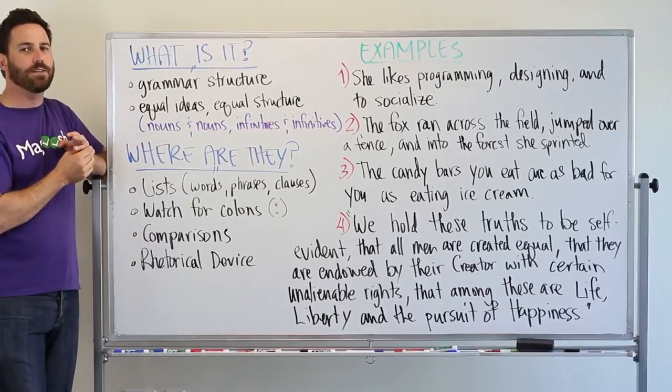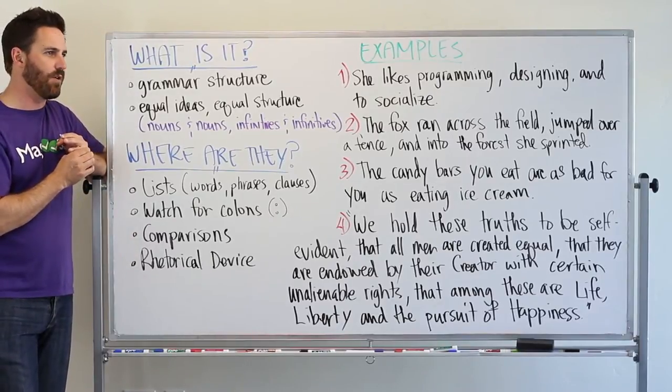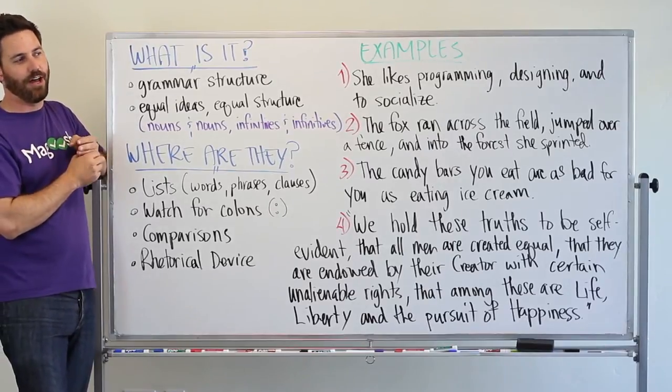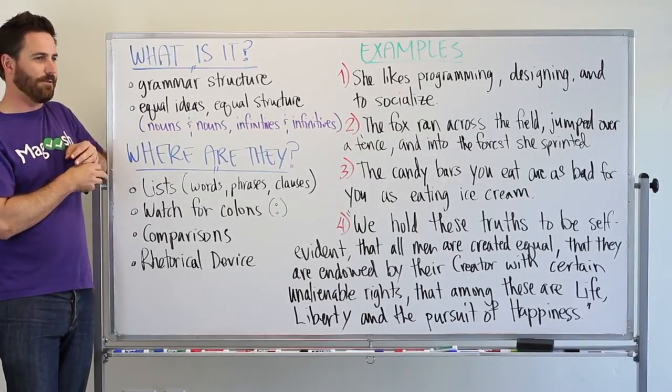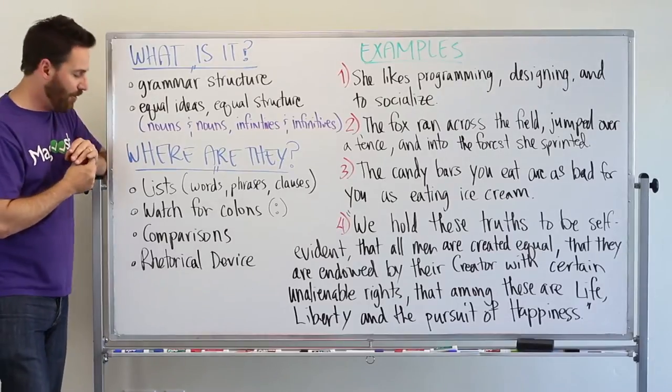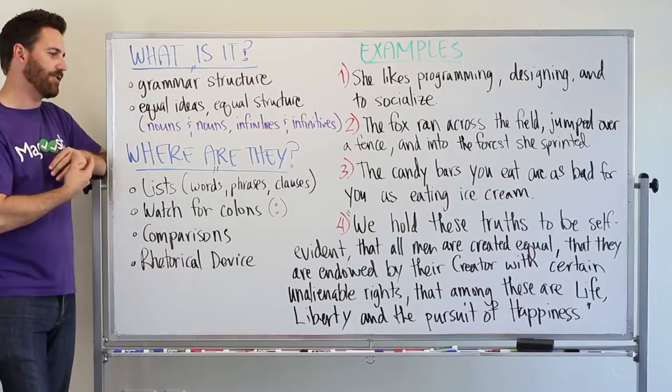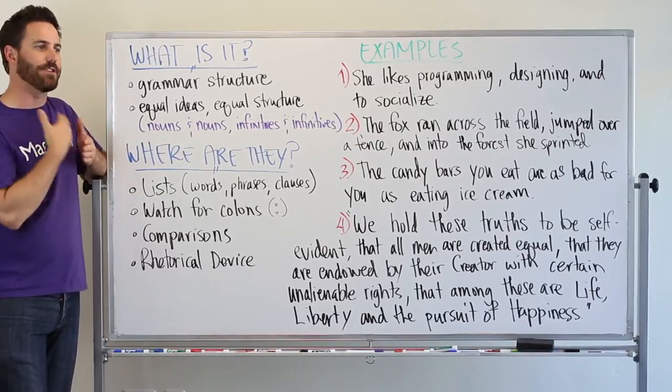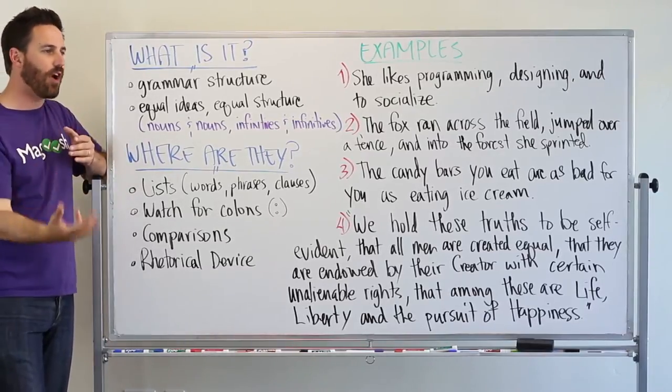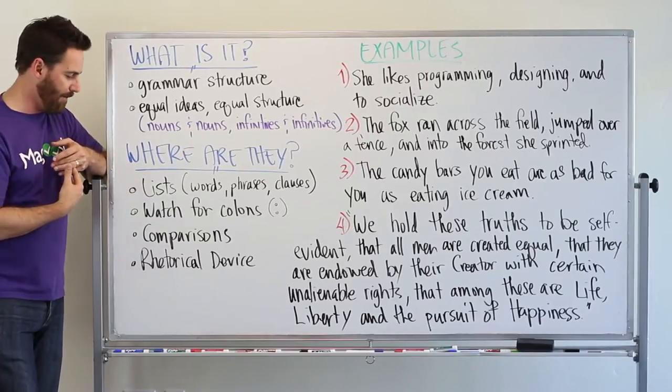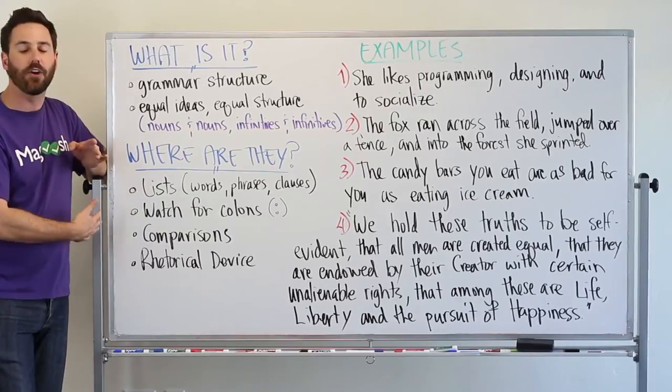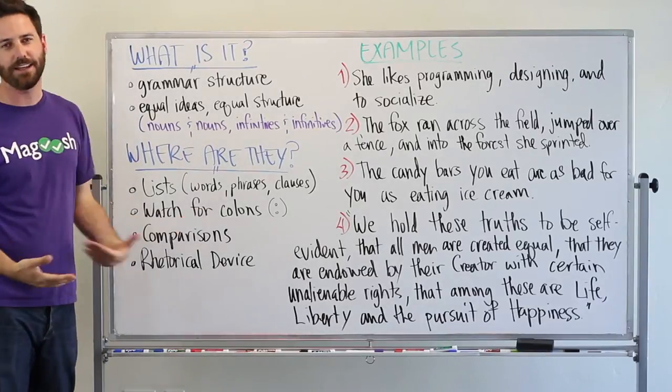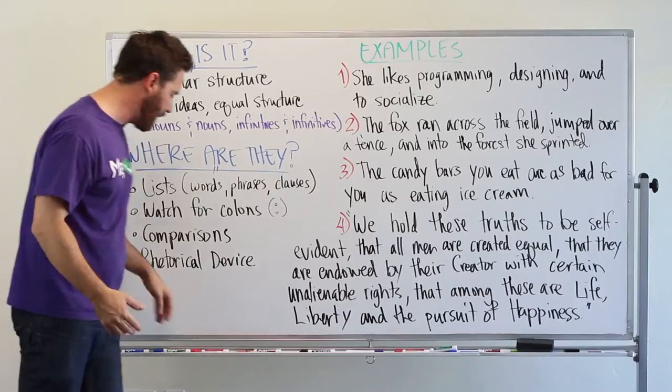The last one here you probably won't see really on the GMAT. This is more in, you'll see this more in fiction for sure. And then also writing with lots of flourish in it. Rhetorical device here refers to sort of the style of how something is written. People can use parallel structures to emphasize points, to draw attention to something. And so that's another place where parallel structure occurs. So enough talking about it. Let's take a look at some examples.